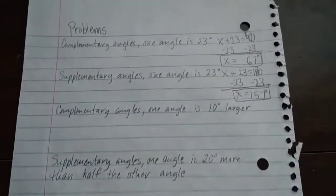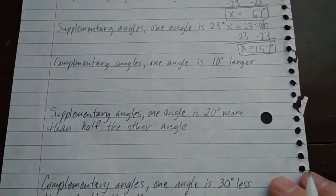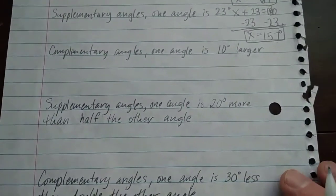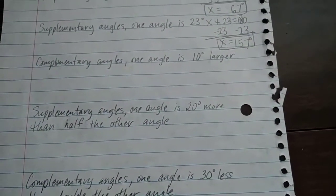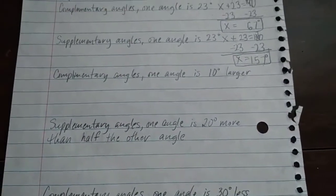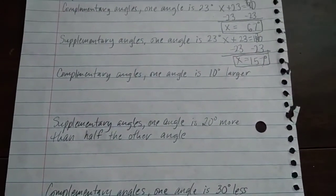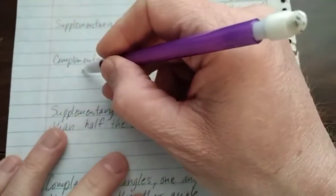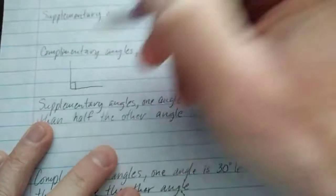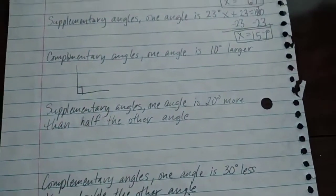Alright, well that one's pretty simple, straightforward. Now we're going to get into a little bit trickier problems. Now we have complementary angles. One of the angles is 10 degrees larger. You know, it's going to help me if I draw this. So complementary angles. I said draw, I meant sketch.